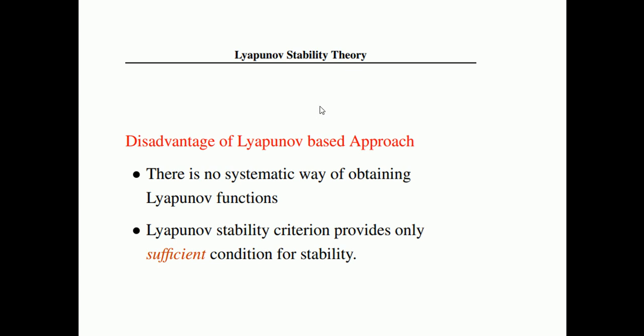The disadvantages of this method are: there is no systematic way of obtaining Lyapunov functions — you have to assume them. Sometimes the assumption is correct and sometimes it is wrong, and if you pick the wrong Lyapunov function the results will not come out correctly. Therefore, the Lyapunov stability criterion provides only a sufficient condition for stability. We will discuss the next topic in the next lecture — thank you very much for listening.